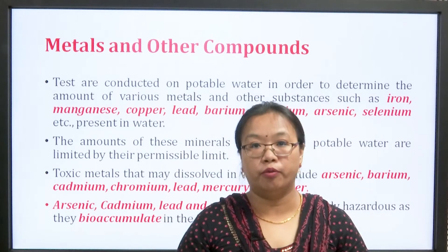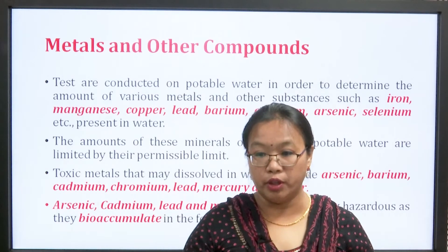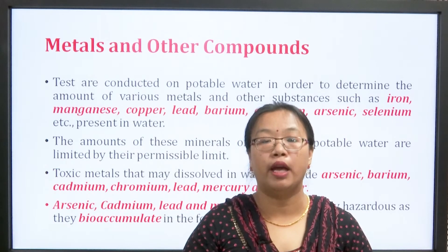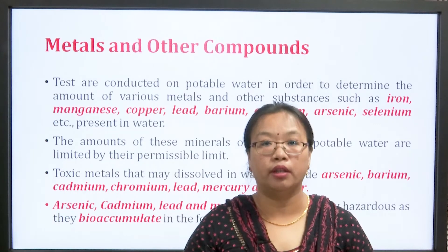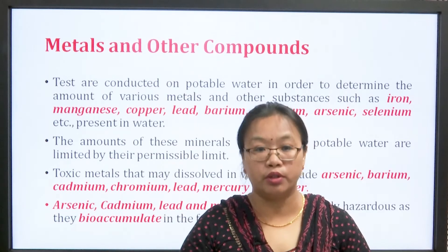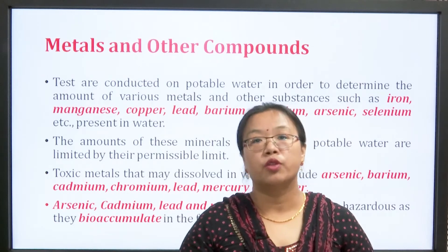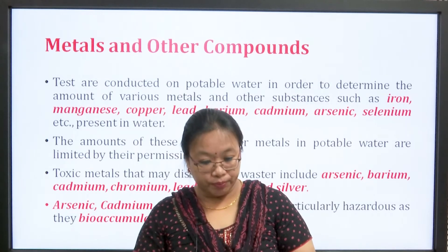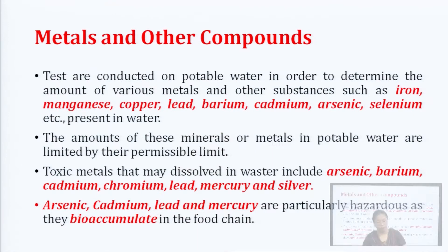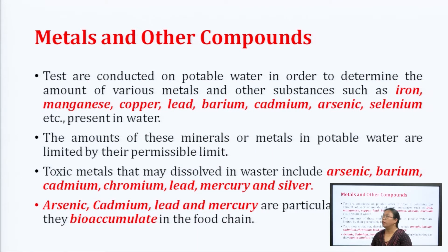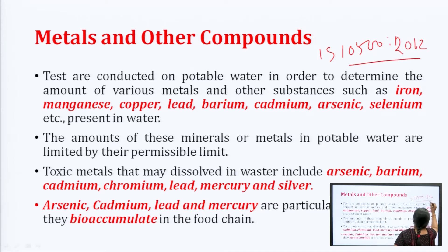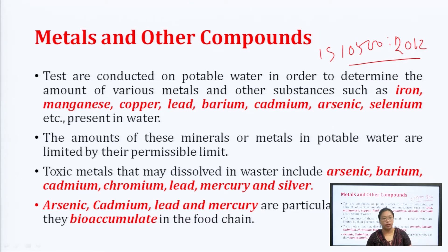We do not generally check for each and everything. For example, if you have an industry which may be using cadmium, arsenic, or some other metal in their effluents and you are staying near them, then they will check for that. The amount of minerals and metals in potable water are limited by their permissible limit. We have already talked about IS code 10500:2012, which gives us the limits — how much is acceptable, how much is permissible, and after what level drinking water will be rejected.